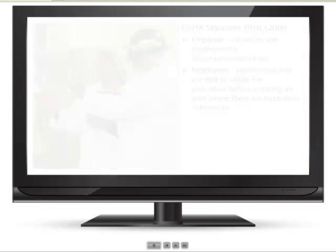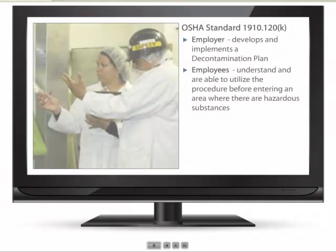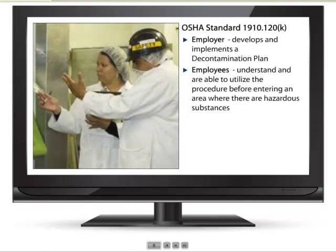An employer must develop and implement a decontamination procedure that meets the requirements of OSHA standard 1910.120. This decontamination procedure will be communicated to employees and implemented before any employees or equipment enter work areas where potential for exposure to hazardous substances exists. It is the responsibility of the employees to understand and utilize these procedures.